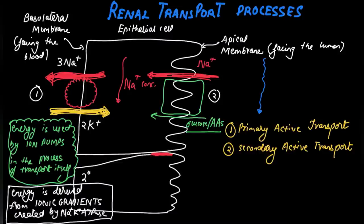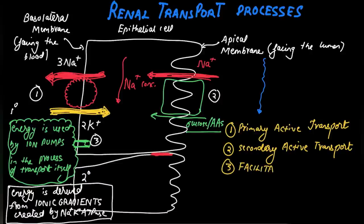Along the basolateral and apical membranes there are also channels — there could be glucose channels, sodium channels, or potassium channels. Channels mediate facilitated diffusion. Facilitated diffusion is a passive process which occurs downhill but is mediated by a channel or transport protein.